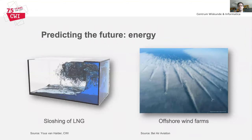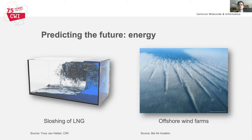A second example in which we wish to make accurate predictions of the future, given the state of today, is in the prediction of fluid flows in energy systems, such as sloshing of liquefied natural gas, which you see on the left, or wind turbine wakes in large offshore wind farms, on the right. In wind farms we want to predict what the effect is of the weather on the electricity production, and how the turbines in the farm can be controlled in order to maximize the power or to address the needs of the electricity grid.